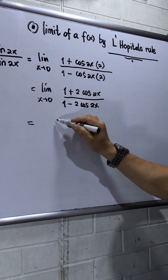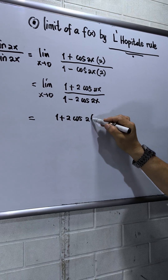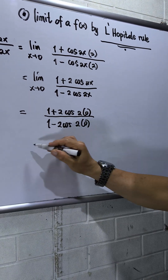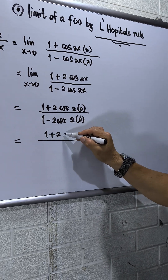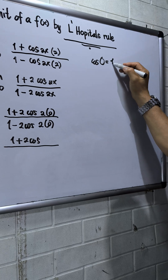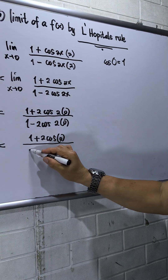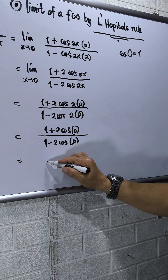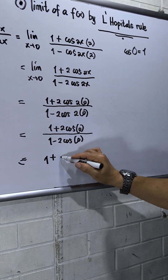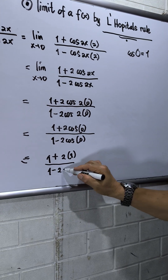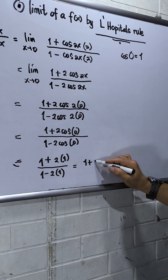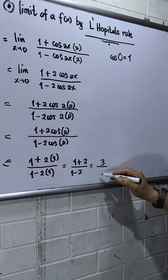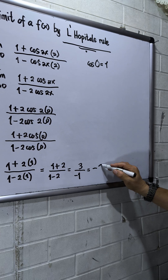Now I plug in x = 0: numerator is 1 plus 2 cosine(2 times 0), denominator is 1 minus 2 cosine(2 times 0). Cosine 0 equals 1, so the numerator is 1 plus 2 times 1 = 3, and the denominator is 1 minus 2 times 1 = negative 1. So 3 divided by negative 1 equals negative 3.